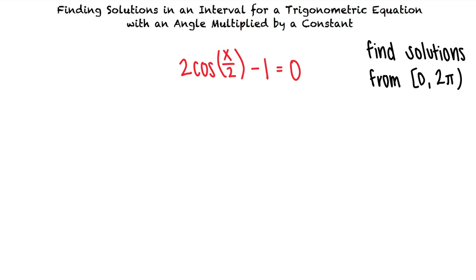Say we're given the equation 2 cosine of x over 2 minus 1 equals 0 and we want to find all solutions in the interval 0 to 2π. We'll let x over 2 equal theta to work in terms of angles we know.